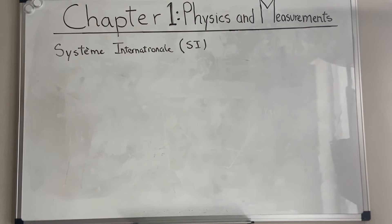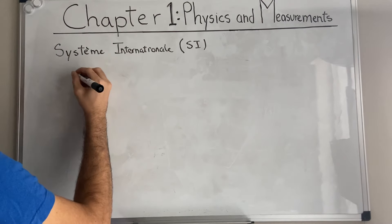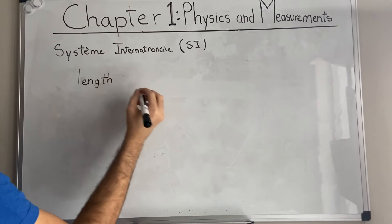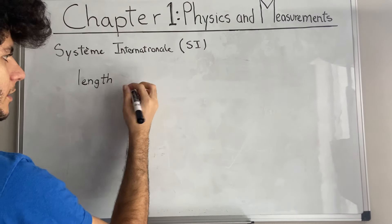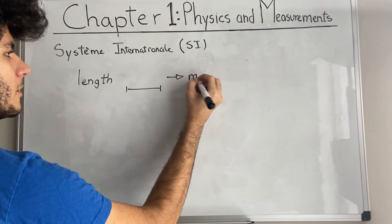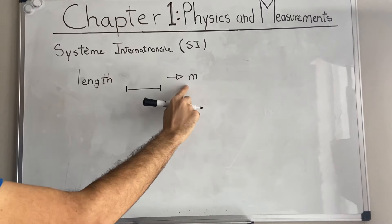These fundamental units of length - this organization basically pinpointed a number of units to describe length, mass, time, among different types of measurements. For length, whenever we talk about the distance, we're going to be dealing with meters, which we abbreviate with m.